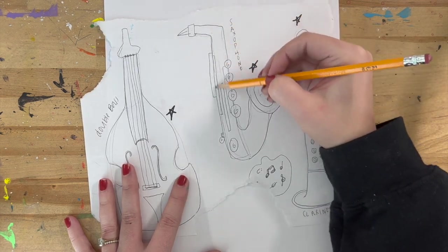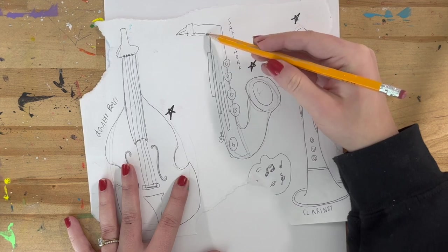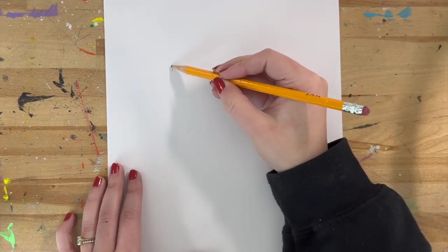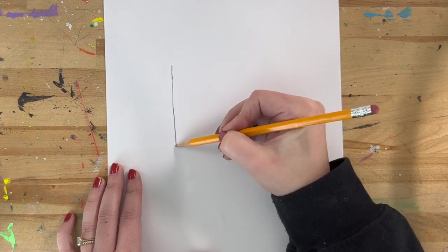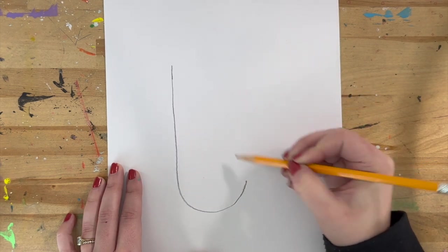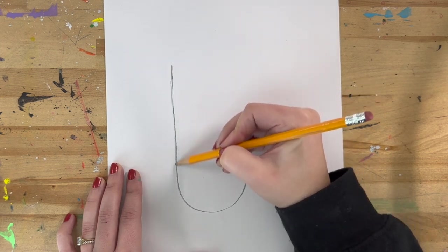We're going to start with this line and it's going to kind of look like a fishing hook. The line is going to start going vertically and then it's going to hook up like a backwards J or a fishing hook.